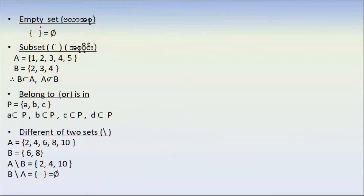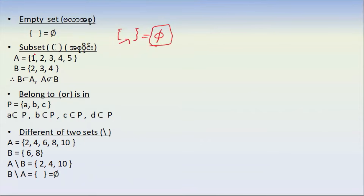The empty set is called a null set. If you look at the elements, you have to be able to find the elements. Now we have a subset. A subset: A is the set {1, 2, 3, 4, 5}. B is the set {2, 3, 4}. So B is a subset of A.